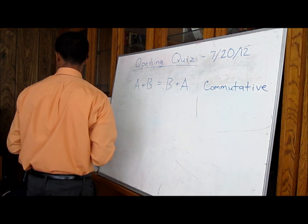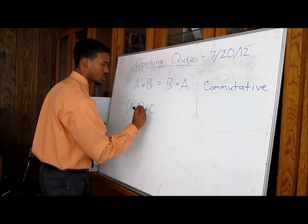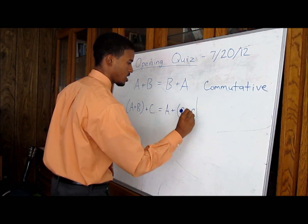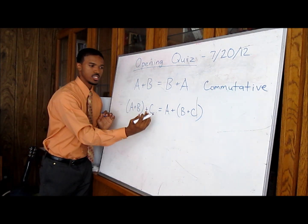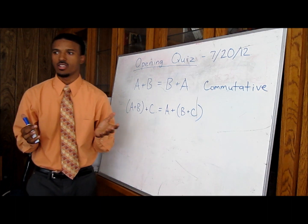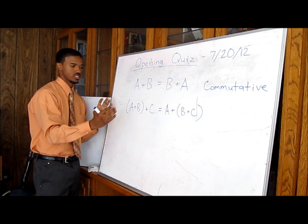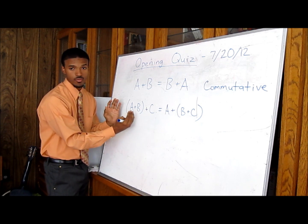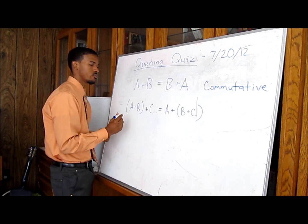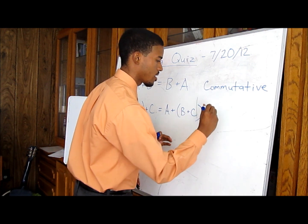The second property: (A plus B) plus C equals A plus (B plus C). Think about the word associate — who you hang out with. Here, A and B are kind of linking up and leaving C out, and over here B and C are associated with one another. So when we have these parentheses, A plus B plus C equals A plus (B plus C) — we think about the word associative.